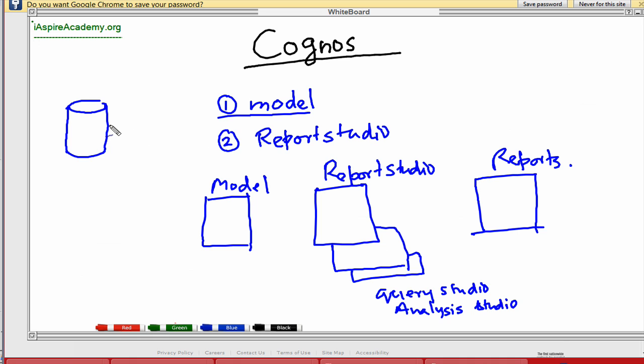So Cognos does these things through this sort of components. The one is something called your model. What the model does is that it maps your database to something which Cognos can understand, which is a model. So it could be a data model or a business model, which we'll get into details later on. But basically, you can think it's some sort of a repository of your data, meaning not actual data, but the structure and the relations of the data.